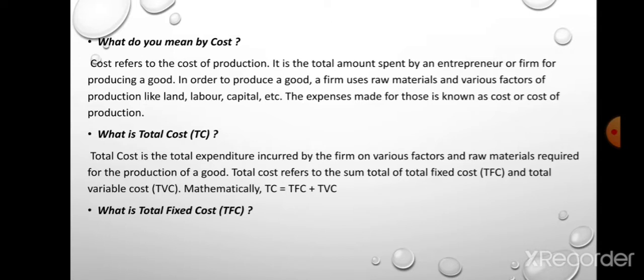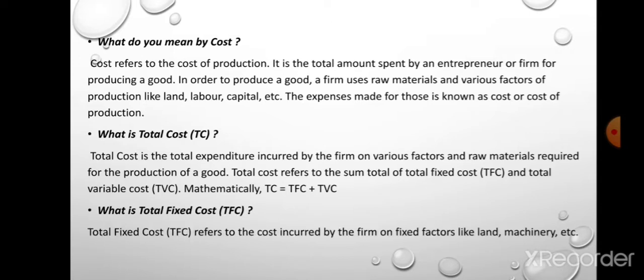What is total fixed cost? Total fixed cost refers to the cost incurred by the firm on fixed factors like land, machinery, etc. Land is a fixed factor. Machinery or equipment — machines or different parts of machines — are also known as physical capital. They are also fixed factors. So the cost incurred by the firm on fixed factors is known as total fixed cost.